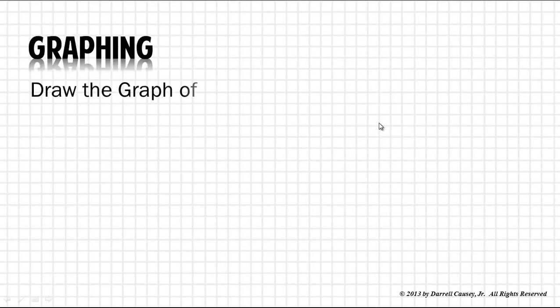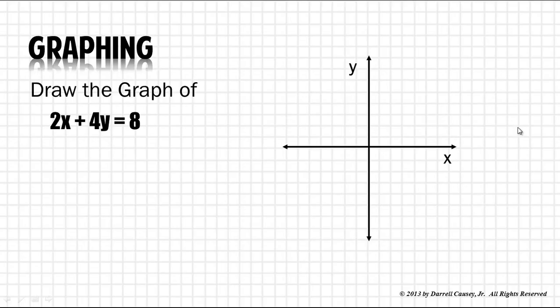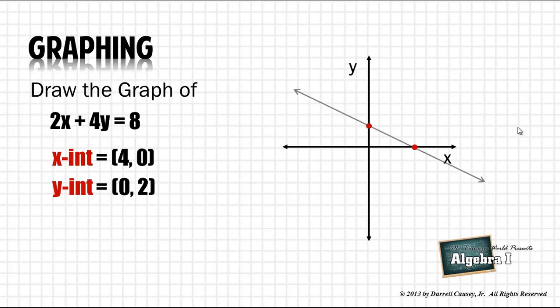Alright, let's graph using our x and y-intercept. We already calculated that the x-intercept was 4, 0 and the y-intercept was 0, 2. So let's plot those two points and draw a line through them. And if you'll note, that line has a negative slope. So if we were to go through and calculate the slope, we would see that it was a negative slope.